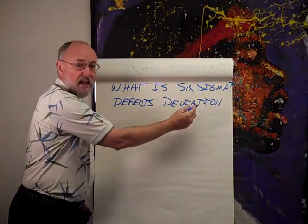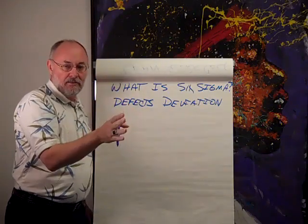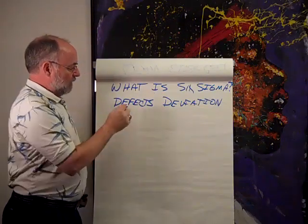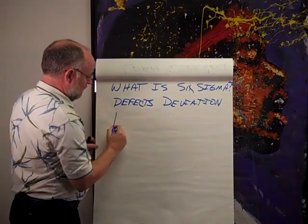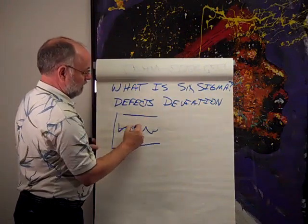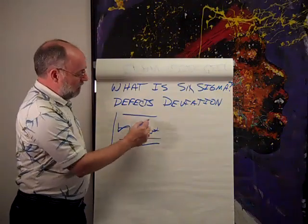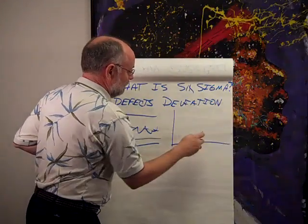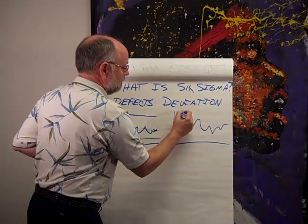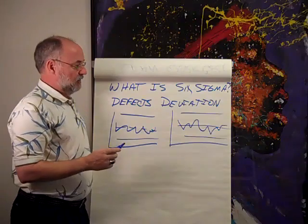What we want to do with deviation is find ways to hit a target value and produce a product that is right on that target line — it does not vary one way or the other. That is our goal. With defects and deviation, we are going to start with some sort of control chart that shows over time how we are performing. In deviation, we want to see how big our product is and how it varies, with control limits showing process performance over time.